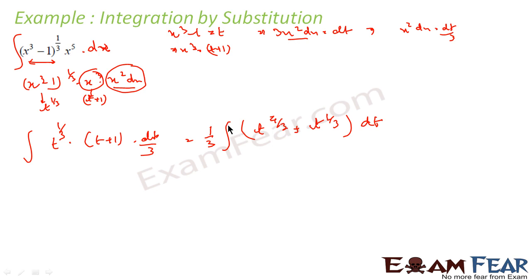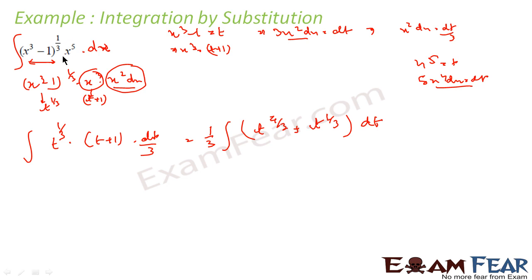That is the power of substitution — converting a complex integral into a simpler one. If instead I had taken x⁵ = t, I would get 5x⁴ dx = dt. But x⁴ is still present in the expression and cannot be cancelled, so that substitution would not help. In this case, substituting x³ − 1 = t is the only approach that works.